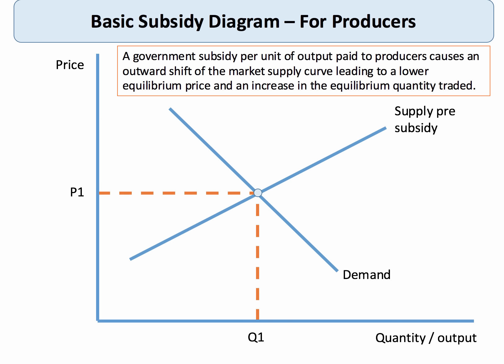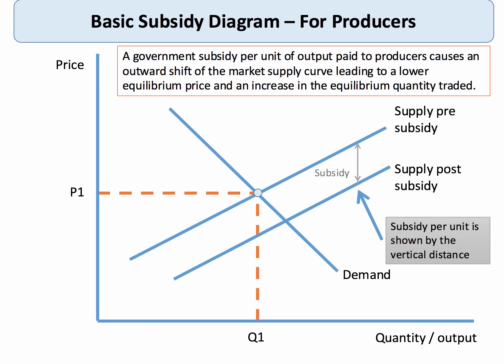The subsidy is on the producer and we assume it's a given amount per unit. This causes a fall in their unit costs and therefore an outward shift of their supply curve. The supply curve shifts down, and the extent of the subsidy is always shown by the vertical distance between the two supply curves — really important and well worth labeling in an exam. This shift increases market supply and results in a new lower equilibrium price and an expansion along the demand curve.